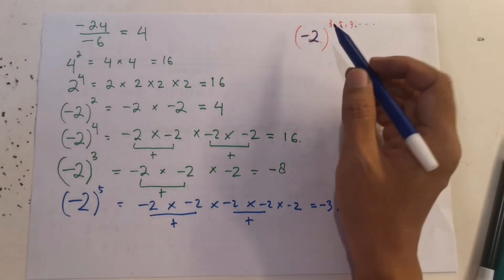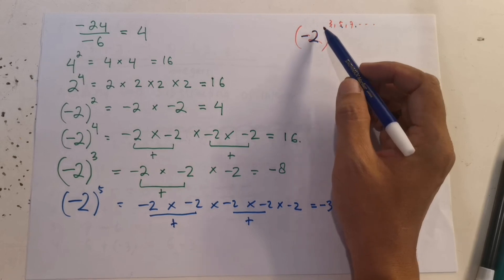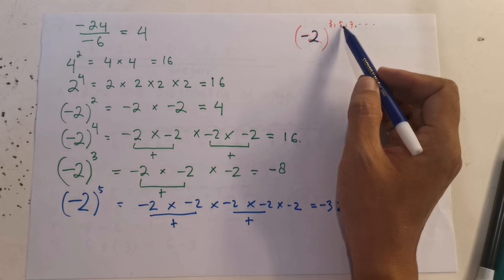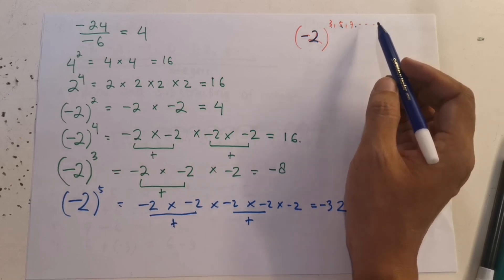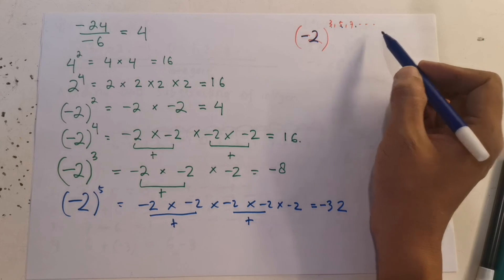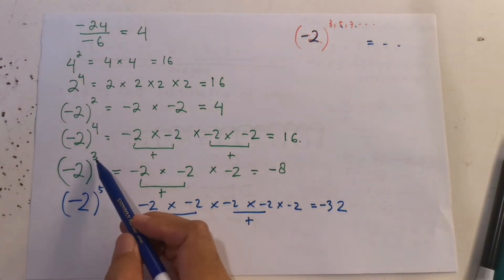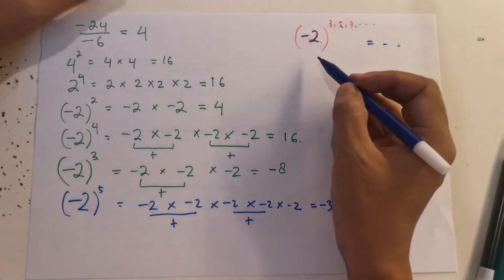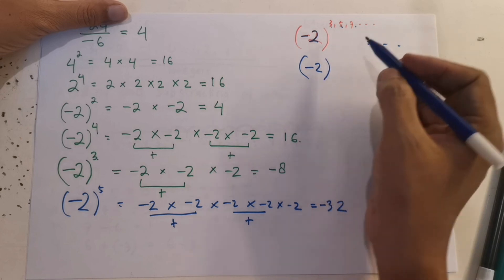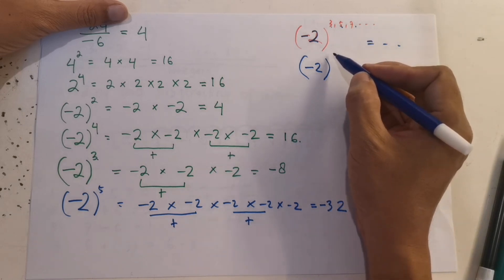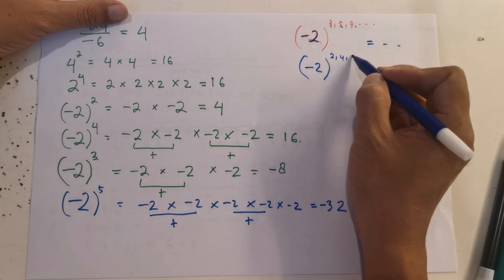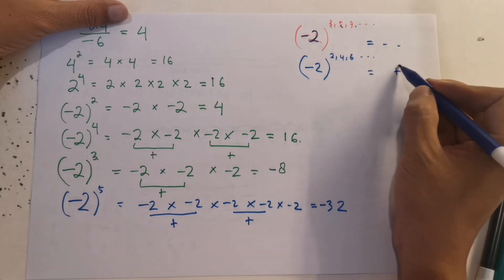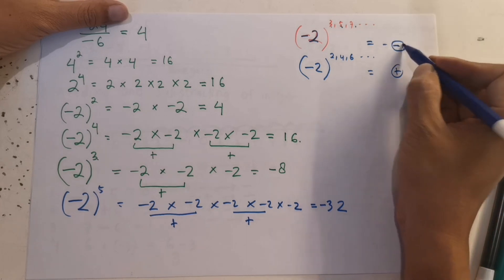You have to remember: if you have a negative number raised to an odd exponent — like 3, 5, 7 — that will give you a negative answer. But if you have a negative number raised to an even exponent — like 2, 4, 6 — that will give you a positive answer.